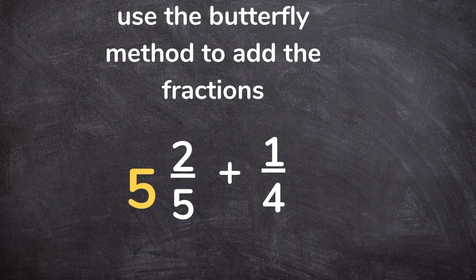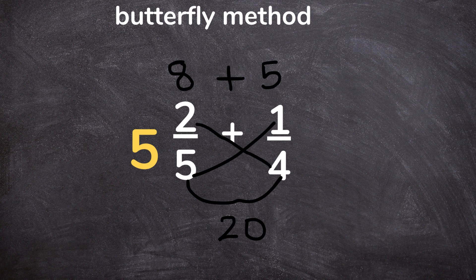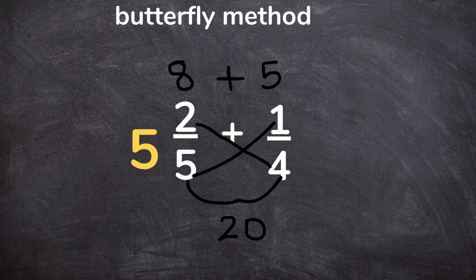So how you do that is you will now cross multiply the numerator of the first fraction times the denominator of the second fraction. So you do 2 times 4 and you will write your answer up here, 8.